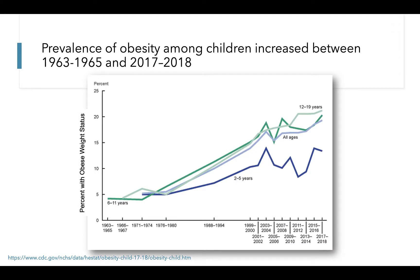Changes in the prevalence of obesity among children aged 2 to 19 years has paralleled increases seen in adults. This figure presents data comparing prevalence of obesity from the 1960s through the present day. On the x-axis we have the year of assessment, and on the y-axis the percent of children classified as obese. The light blue line represents all ages combined, showing a slight increase between the 1970s and 1980s but a very stark and significant increase between the 1980s and the 2000s, continuing to increase into the present day. Similar trends are seen broken out for 2 to 5 year olds, 6 to 11 year olds, and 12 to 19 year olds.